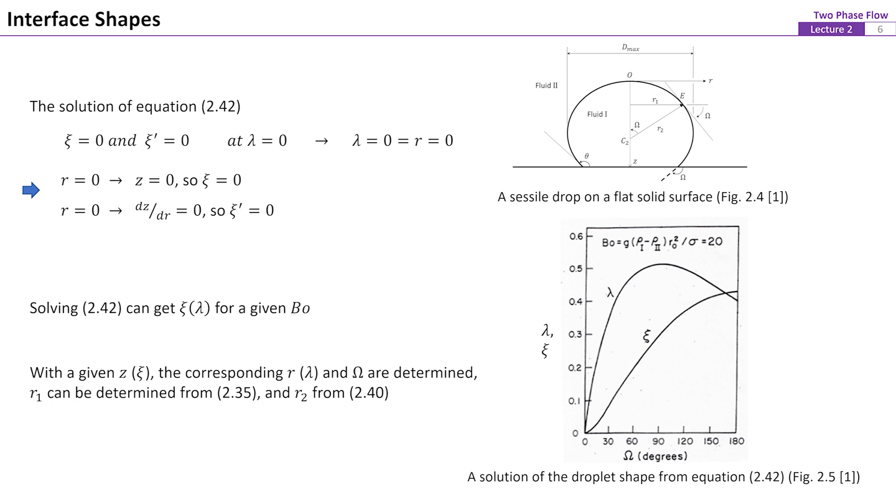Note that the solutions of Cc and lambda are equivalent to the solutions of R and Z. The radii of the droplet at every Z location, in other words, the shape of the droplet, can then be determined.